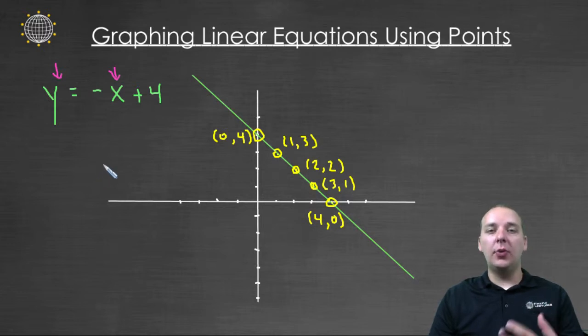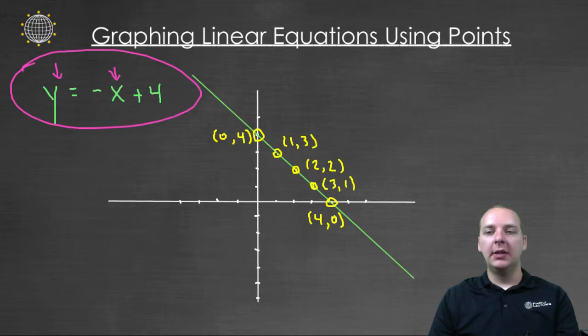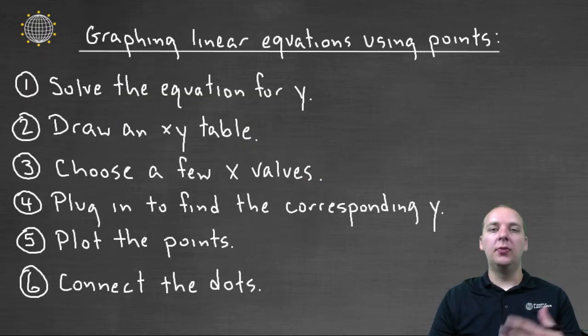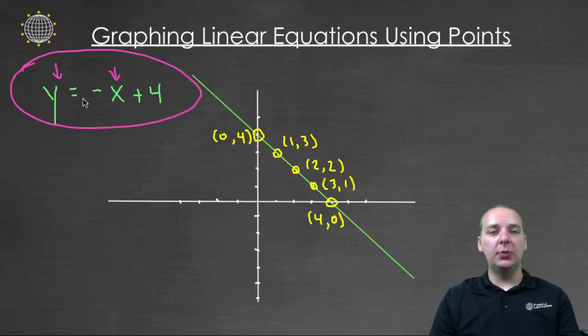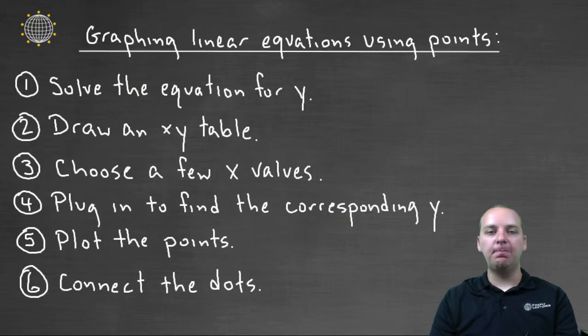We can use that to our advantage to find the graph of linear equations like this. Here are some steps that we can do to find the graph of a linear equation using points. Step number one is to first of all solve the equation for y if it's not already solved for y. A lot of these equations like this one will already have y equals, and if it doesn't, then we should make it be y equals using algebra, adding and subtracting, multiplying and dividing.